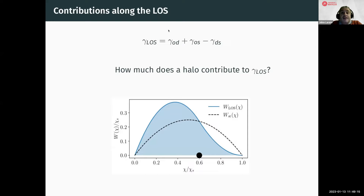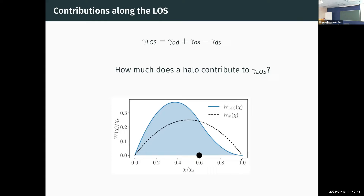Looking at the line-of-sight shear — the external tide appearing in the minimal lens model — I plotted the relative contribution to that shear of various perturbers along the line of sight. With a main source at a given co-moving distance chi_s and the main lens situated at about 60% of the co-moving distance, you can see the relative contribution of each perturber peaks in the foreground. So it has a different kernel compared to standard weak lensing shear, which may be important in the future.